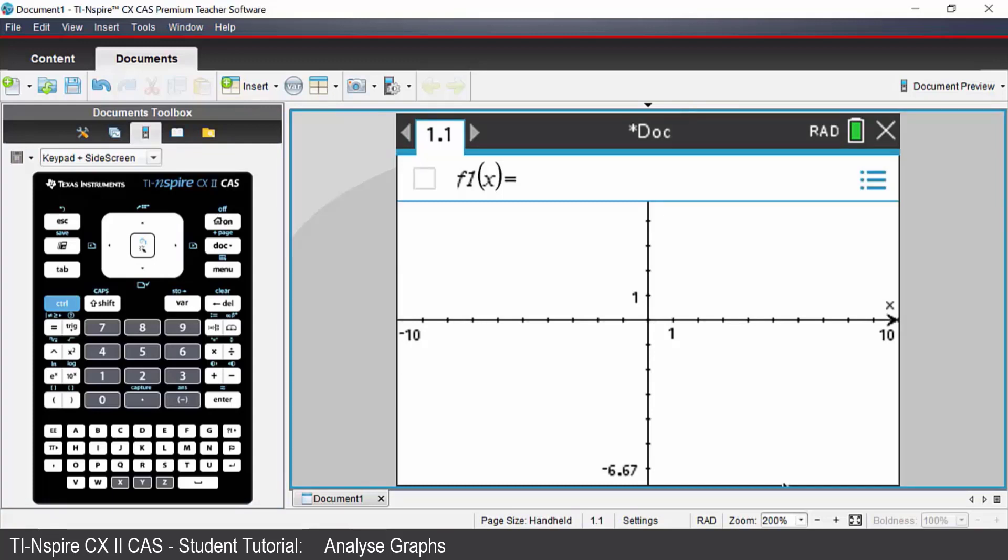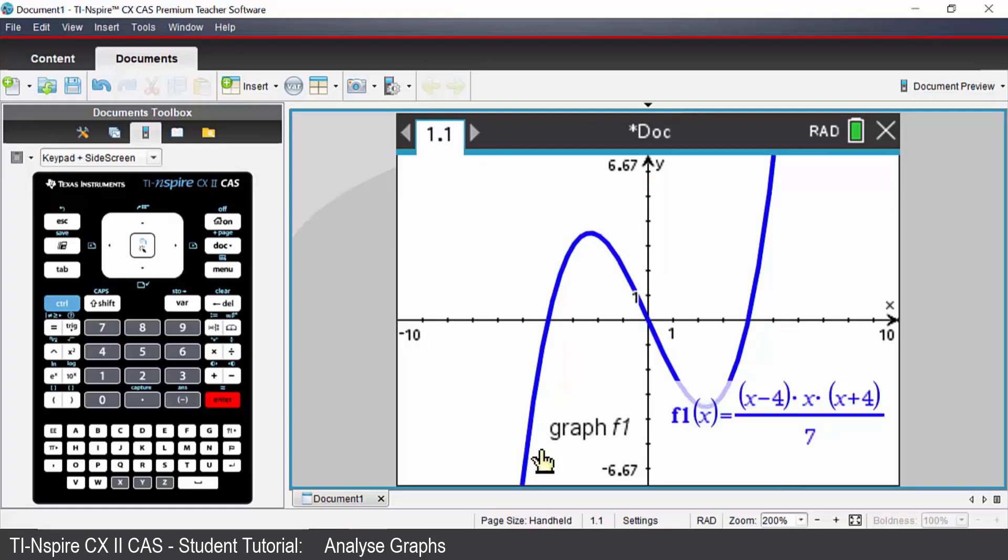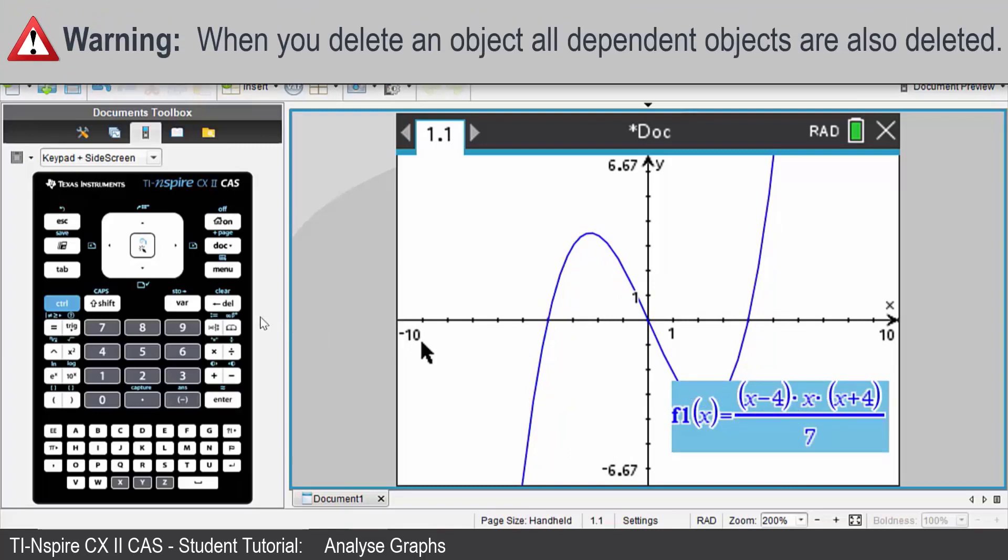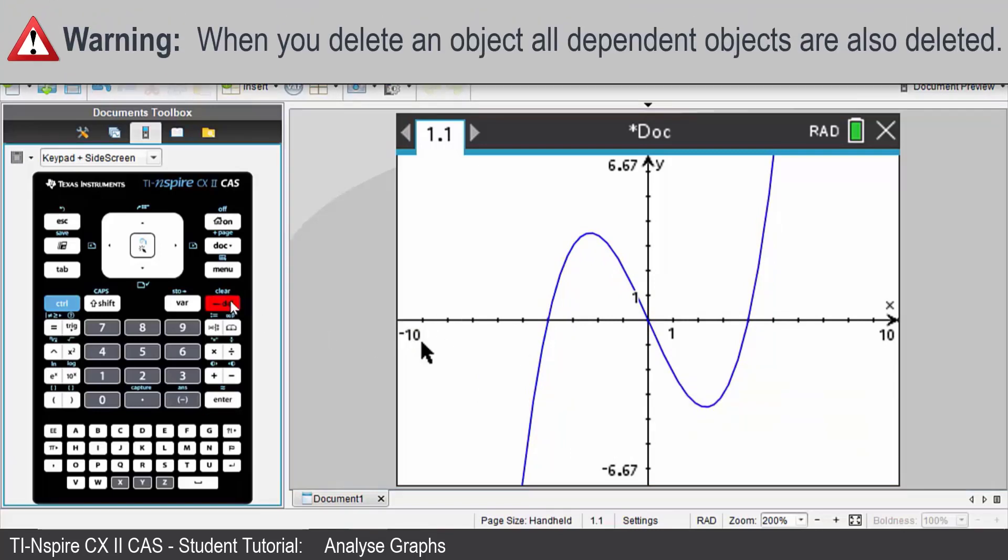We are going to plot a cubic polynomial to start with, and it's going to be x take 4 multiplied by x multiplied by x add 4, and then we're just going to divide by 7. I'm just going to remove that label by clicking on the label and hitting the delete key.